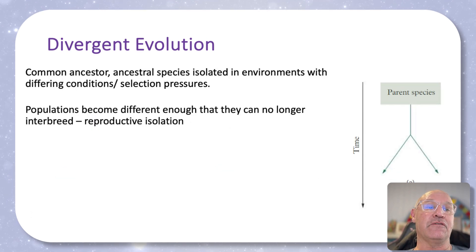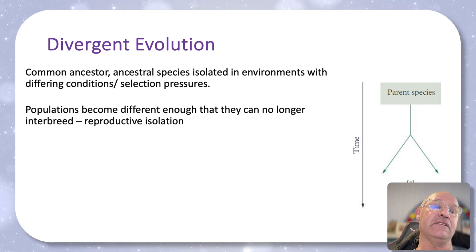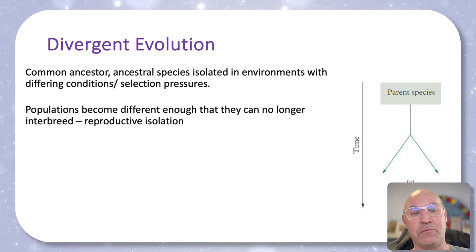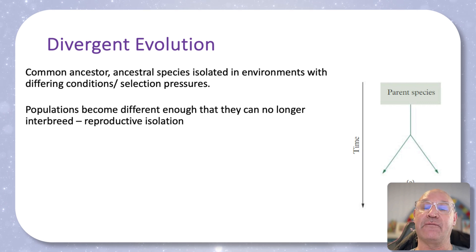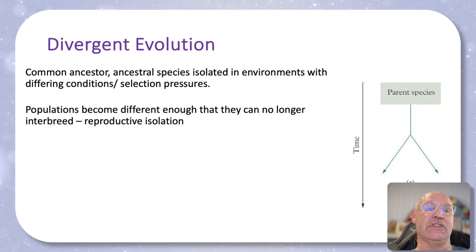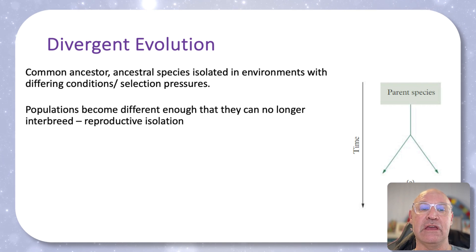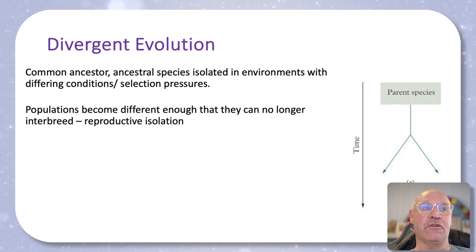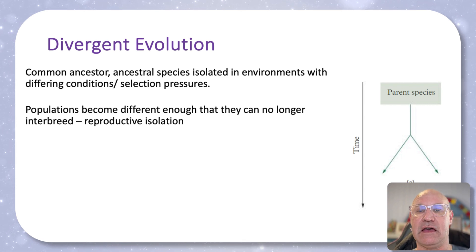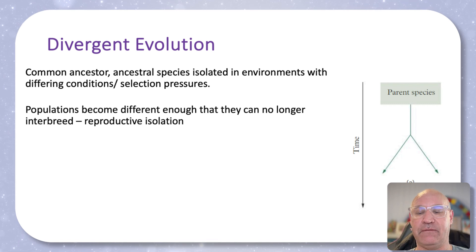Divergent evolution is when you've got a common ancestor but the ancestral species are isolated from each other and they're in environments with different conditions. So they become different enough that they can no longer reproduce fertile offspring — they're reproductively isolated. When we've got this divergent evolution, we often see homologous structures: same structure, different function.